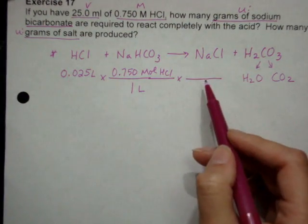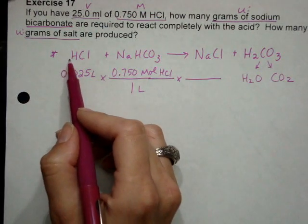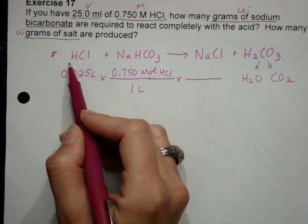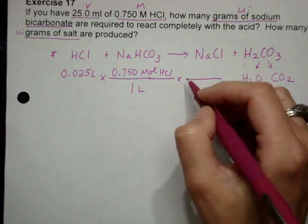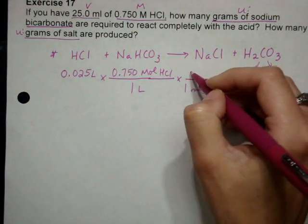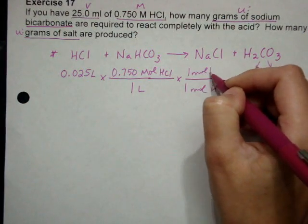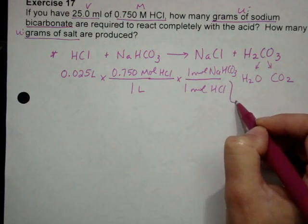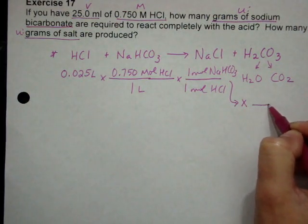And then I can go back to my balanced equation, and I need to go from moles of HCl to the first thing I'm looking for is the sodium bicarbonate. So moles of sodium bicarbonate, so one mole of HCl on the bottom to one mole of baking soda on the top. I'm going to multiply down here, excuse me.